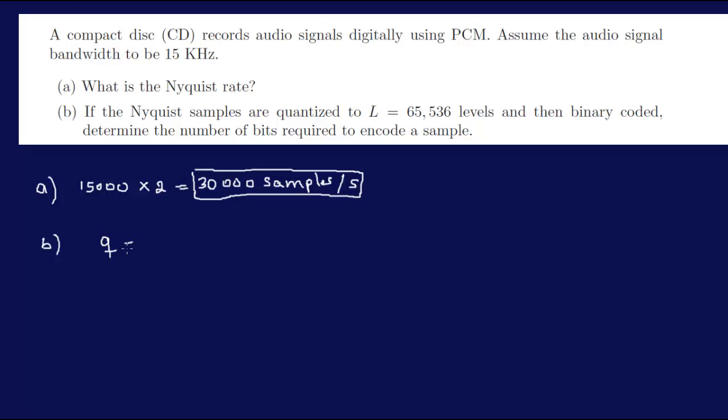Now, Q is the quantization level, and N represents the number of bits. So Q is equal to 2 to the power of N, and of course we have the quantization levels here as 65,536. So we can just equal that. So we have 65,536 is equal to 2 to the power of N.